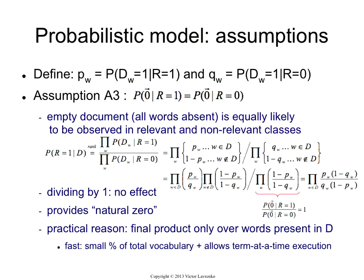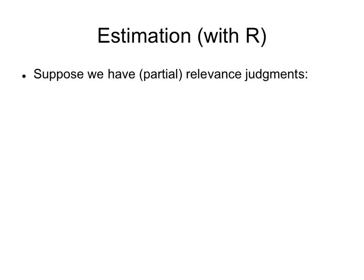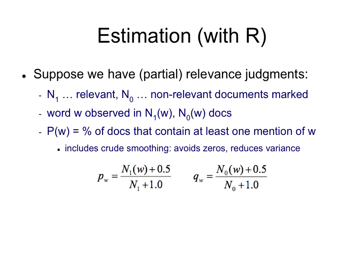So I can't have that happen. The way to avoid it is to make sure that your probabilities are never exactly 0 and never exactly 1. So you add a half to the numerator, add a 1 to the denominator, and that makes sure that you always bound away from 0 and 1. So that's pw, that's qw, just counting from the data.